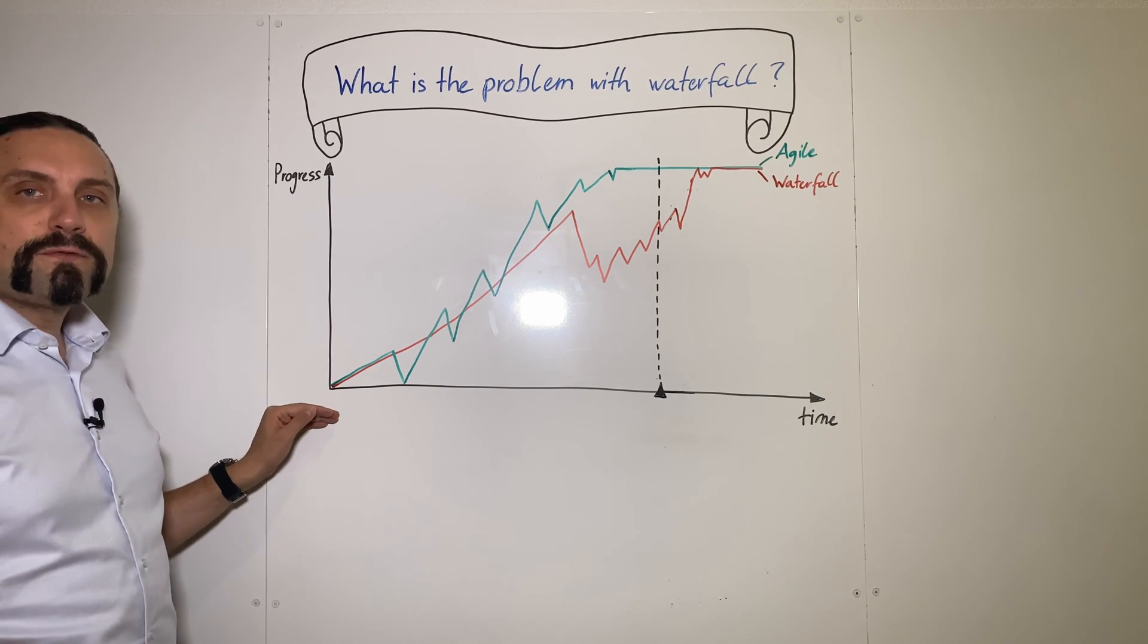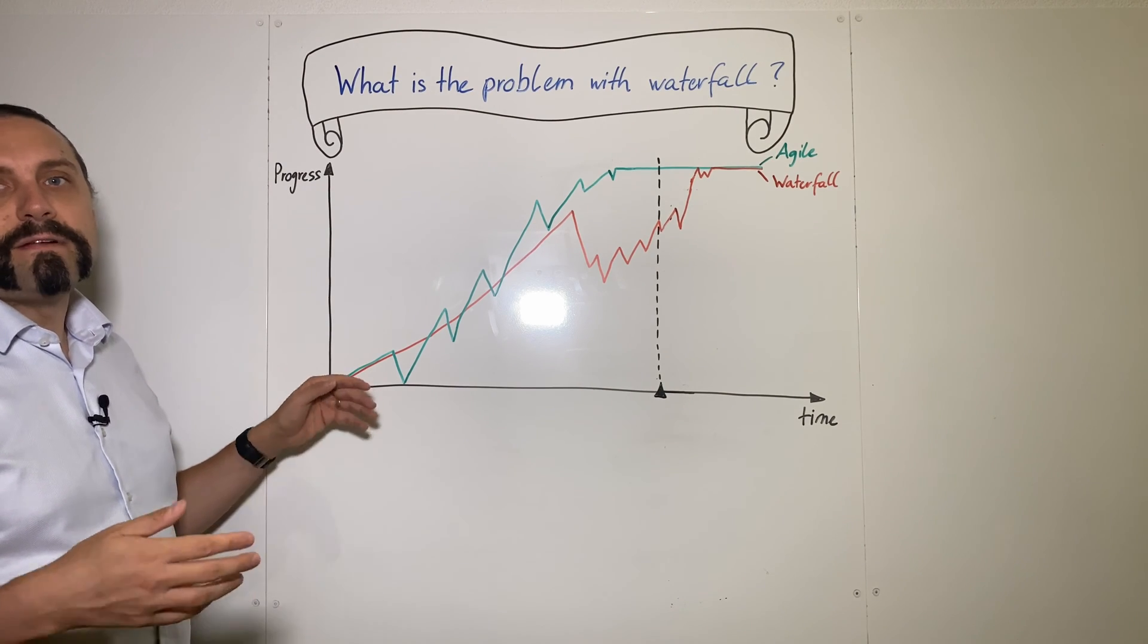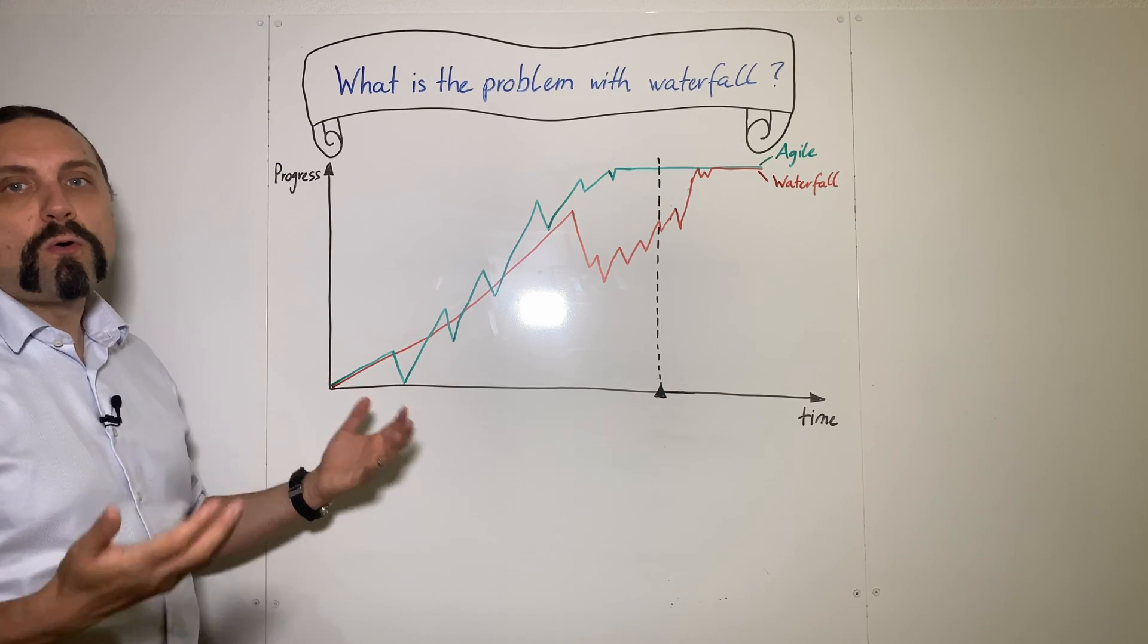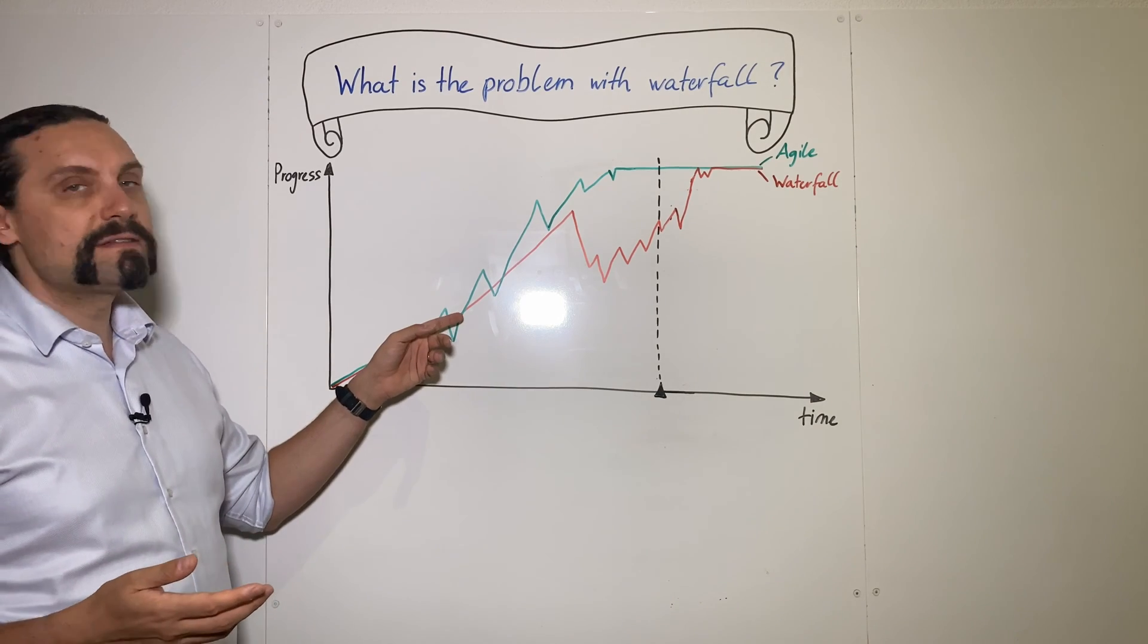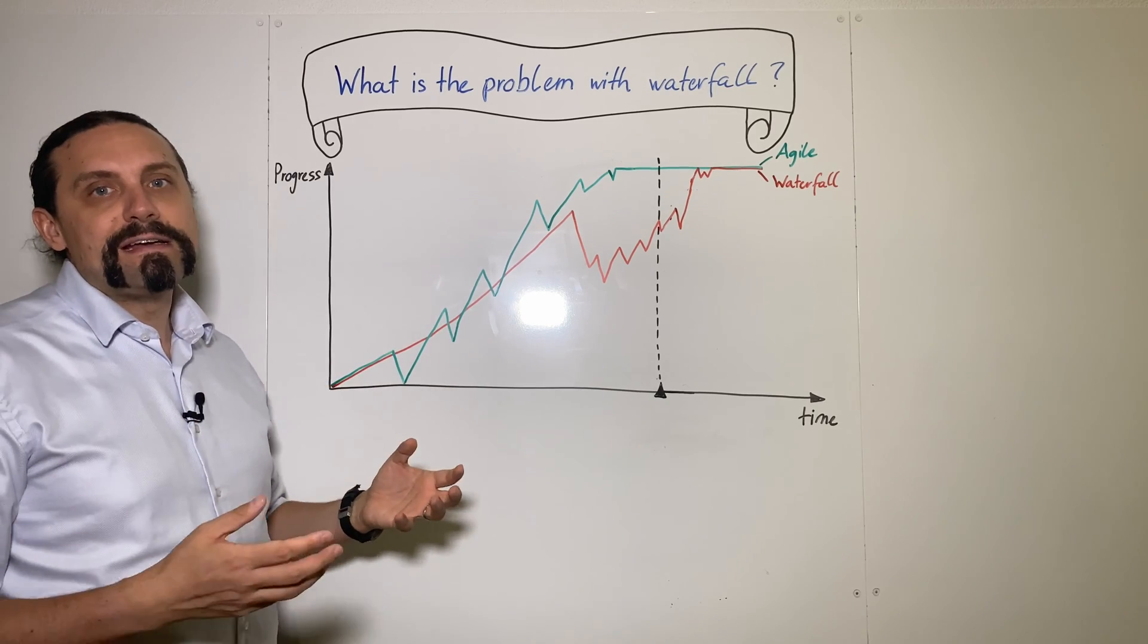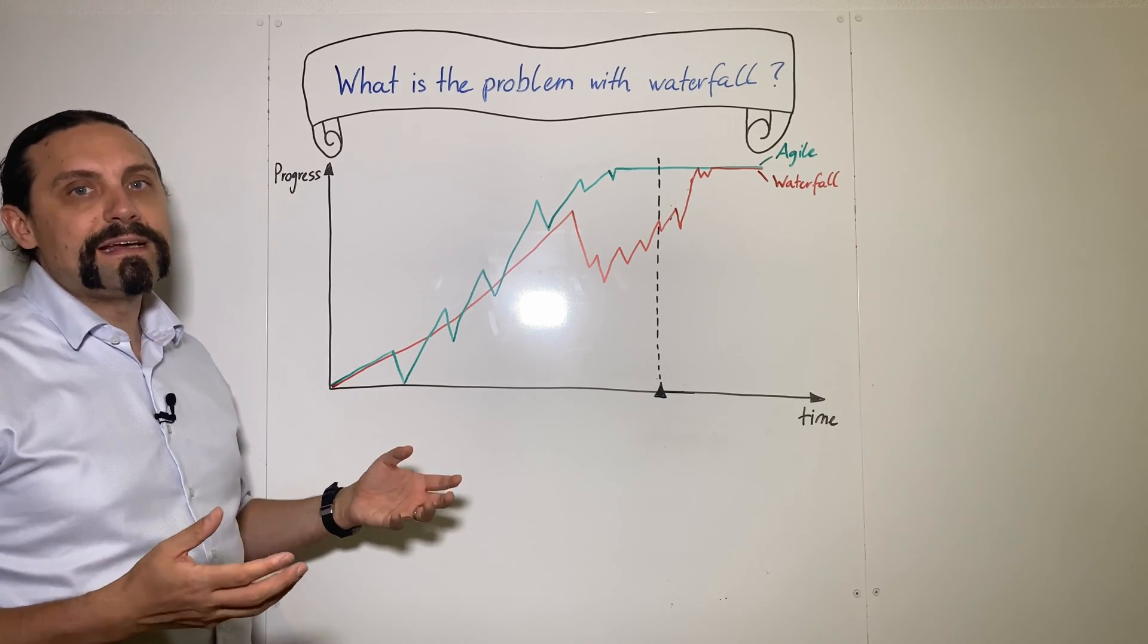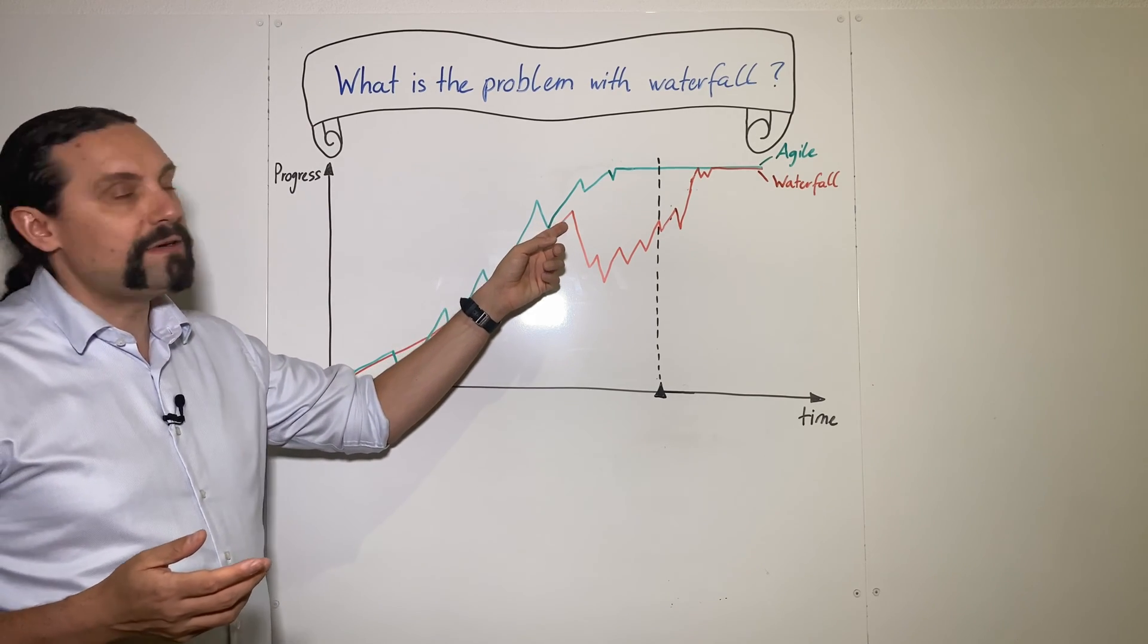So in the waterfall process we start with the analysis phase where we are going to gather all of the requirements. When we have all of these requirements we are starting to design, get the architecture and specification, and then we are going to implement it.